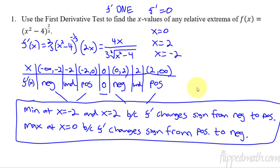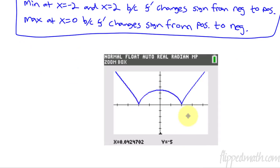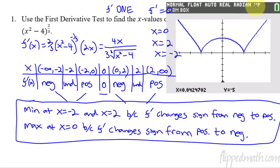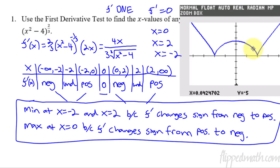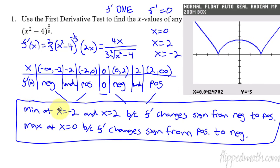Here I've got the graph. I'm going to drag it up here so you can see how it matches up with negative two and two being the undefined derivative points and being the minimums, and then the max at x equals zero. Kind of cool — we hit it spot on by doing this.